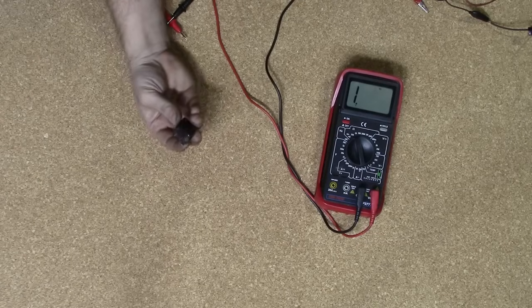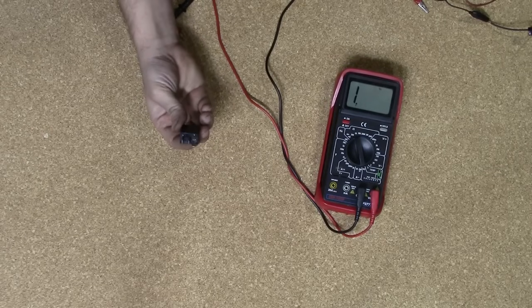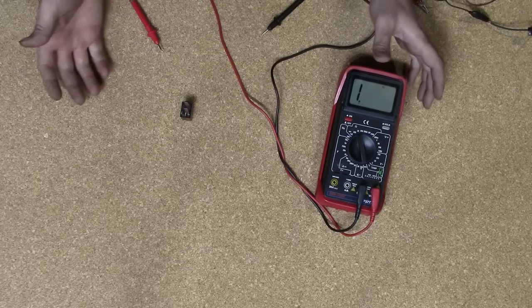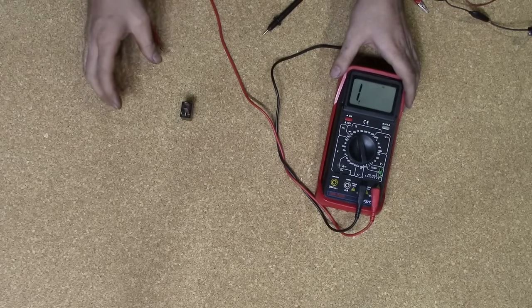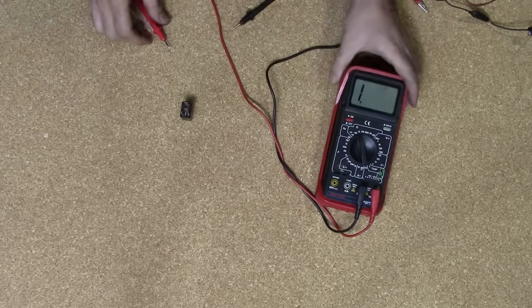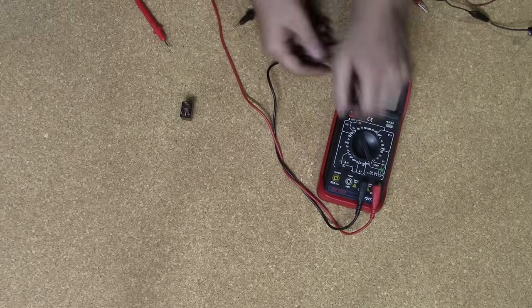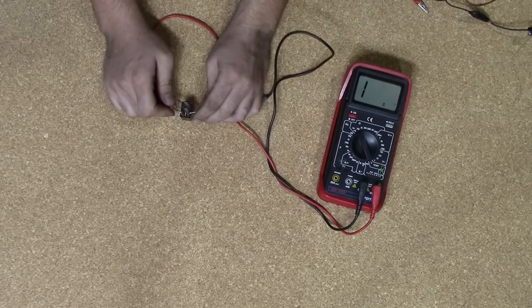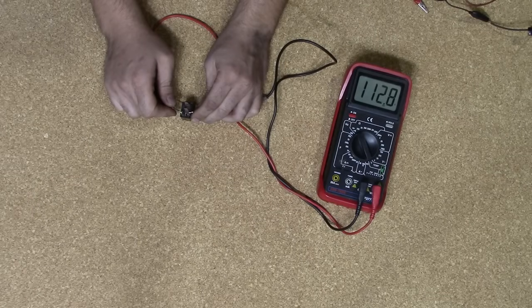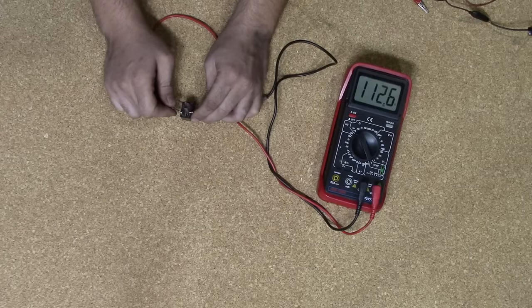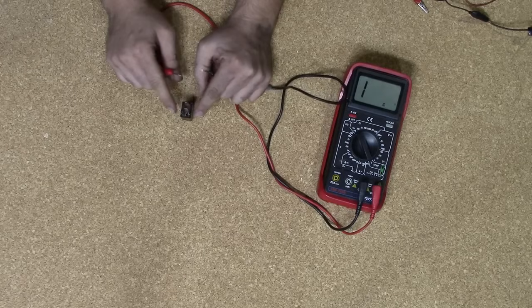Now as promised, here's how you test a relay that doesn't have a diagram or any numbers on its pins. Basically, you start off by finding your control circuit. Your control circuit is the one that's supposed to have an ohms reading of between 50 to 120 ohms. You just get your multimeter, set it to the 200 scale, and then you just touch random pins until you get a reading of between 50 to 120. We got 112 ohms, so right off the bat, we found our control circuit, which is going to be these two pins.